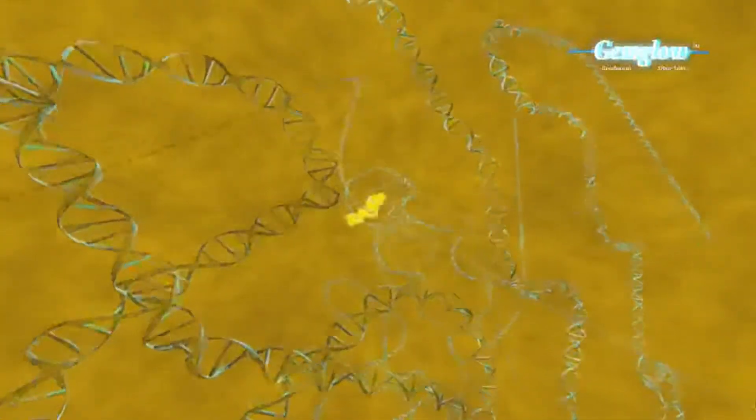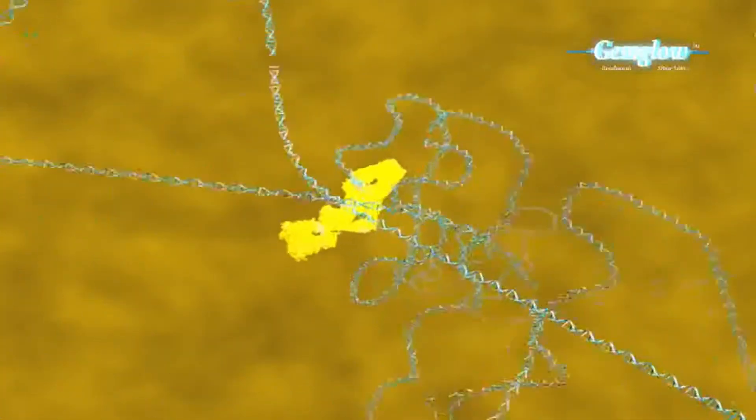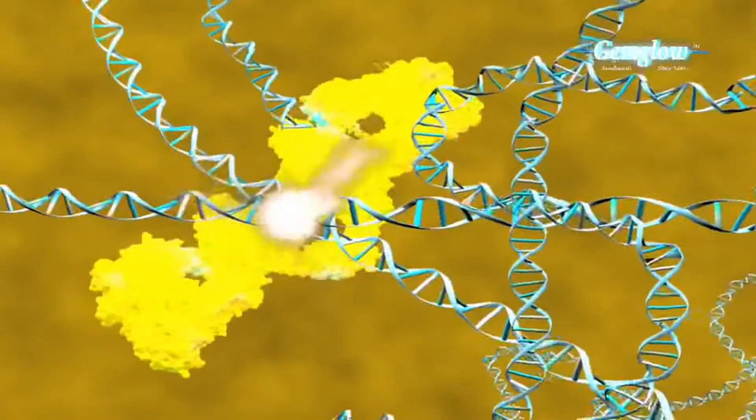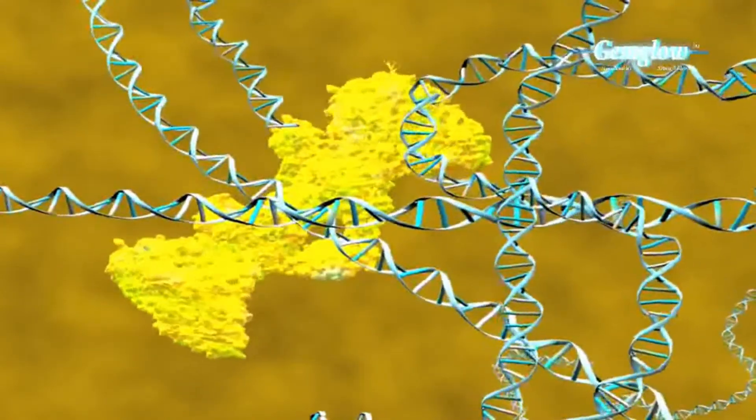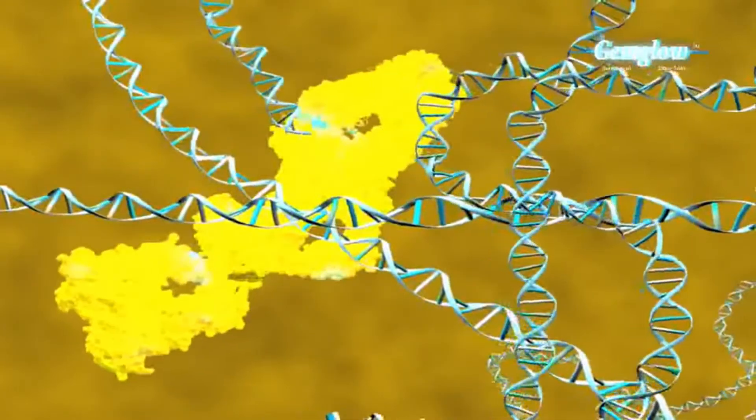The first one is DNA gyrase which removes supercoils in replicating DNA, and induces negative supercoils, thus opens up bacterial DNA.